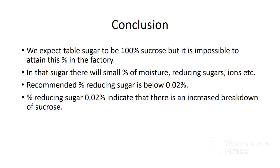Although table sugar is expected to be 100% sucrose, it is impossible to achieve this in a sugar factory. The sugar will contain small percentages of moisture, reducing sugars, and ions. The Kenya Bureau of Standards has set minimum limits for non-sucrose compounds in processed sugar to ensure consumers receive the best quality. These non-sucrose compounds are not harmful to health, but they reduce sucrose content and affect storage and handling. The recommended percentage of reducing sugars in table sugar is below 0.02%; if it is above this, it indicates high hydrolysis along the processing line.